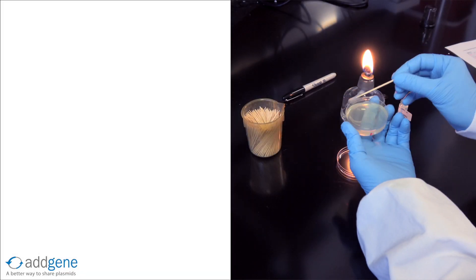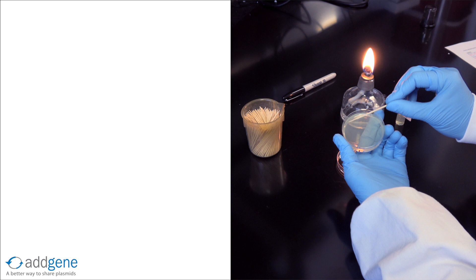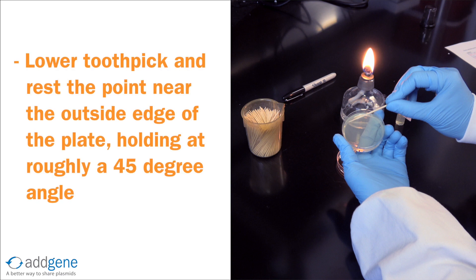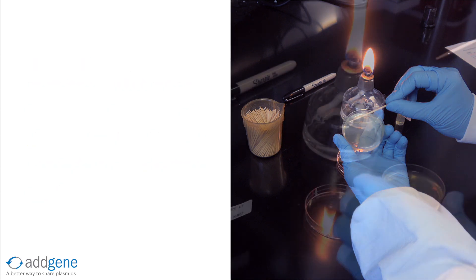With the tip of the toothpick now covered in bacteria, we can begin streaking. We lower the toothpick and gently rest the point near the outside edge of the agar plate, holding the toothpick at roughly a 45 degree angle.